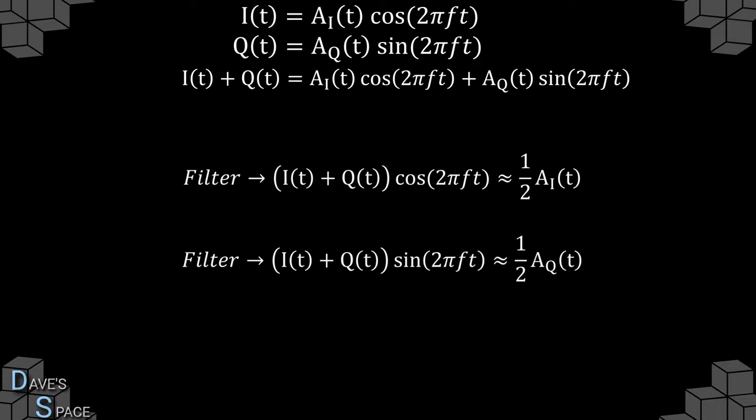It stands to reason that filtering those signals should allow us to recover our original modulation waveforms A_i and A_q. So even though we start off with two separate signals — cosine and sine — multiplied independently with some modulation waveforms, upon doing coherent demodulation, in which we multiply one by cosine and one by sine, we can recover our original signals.